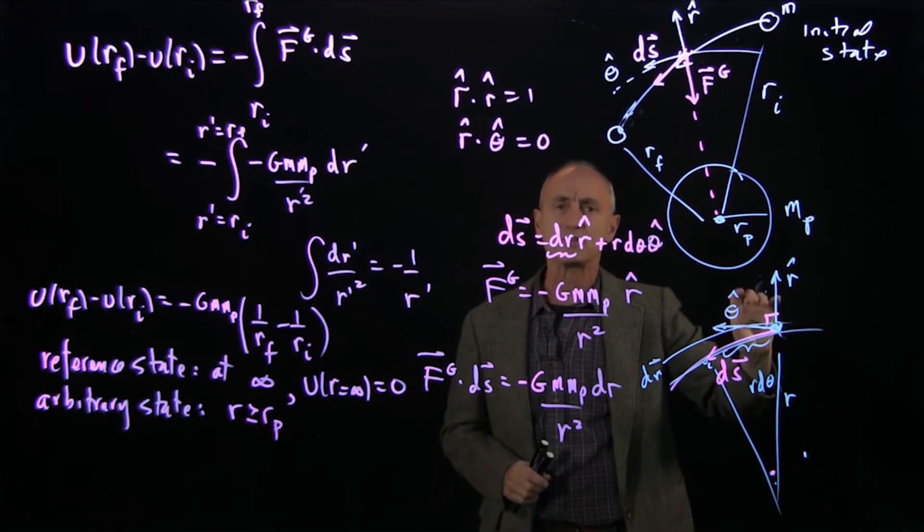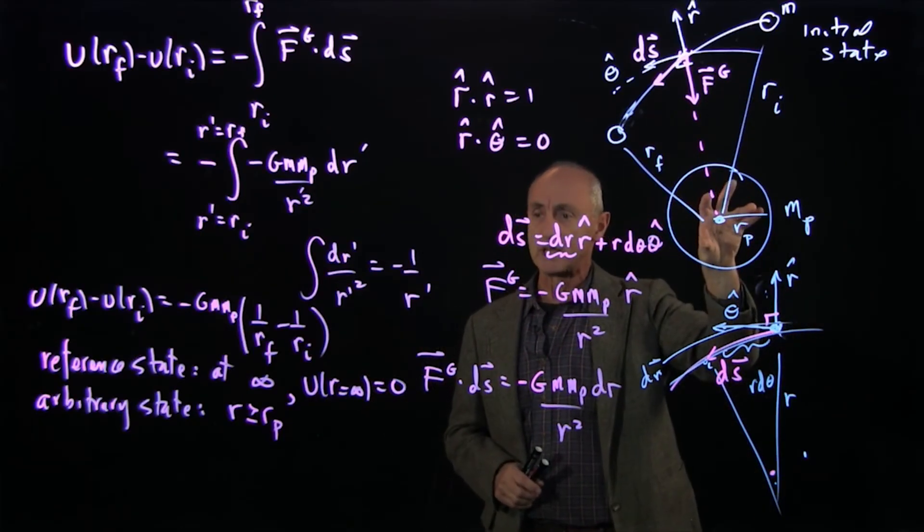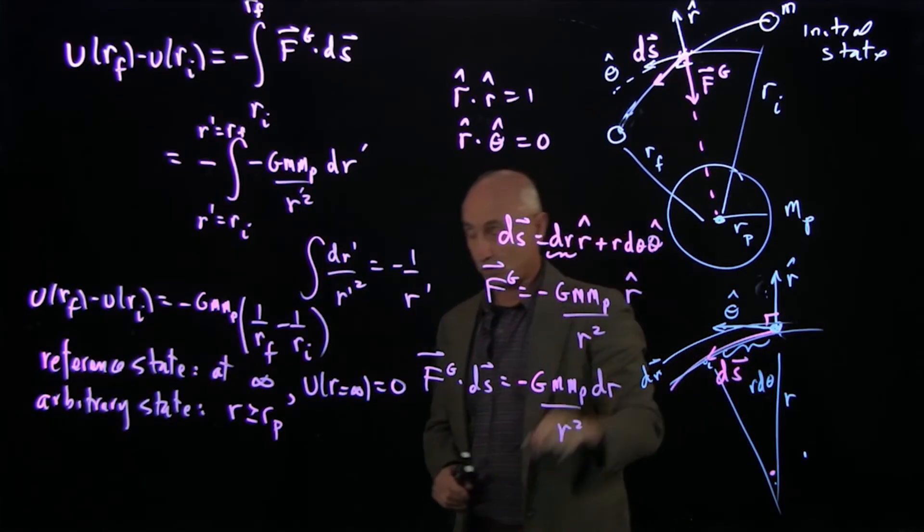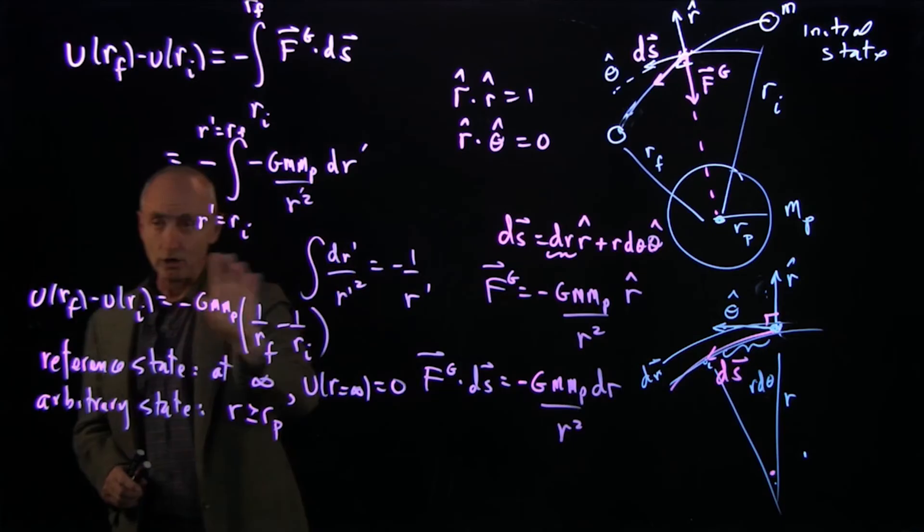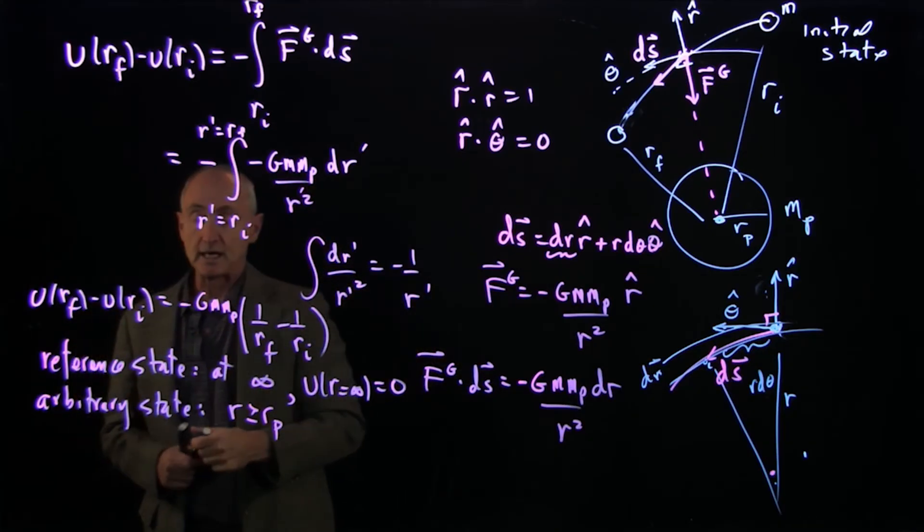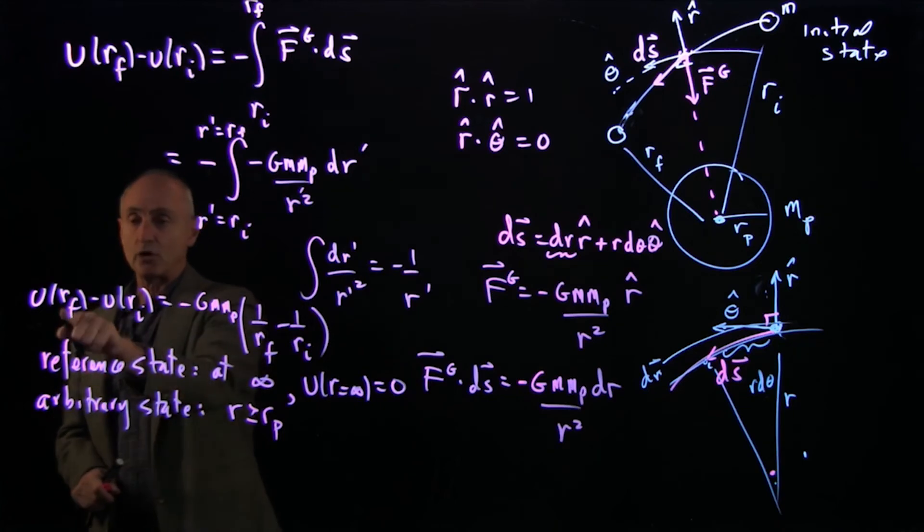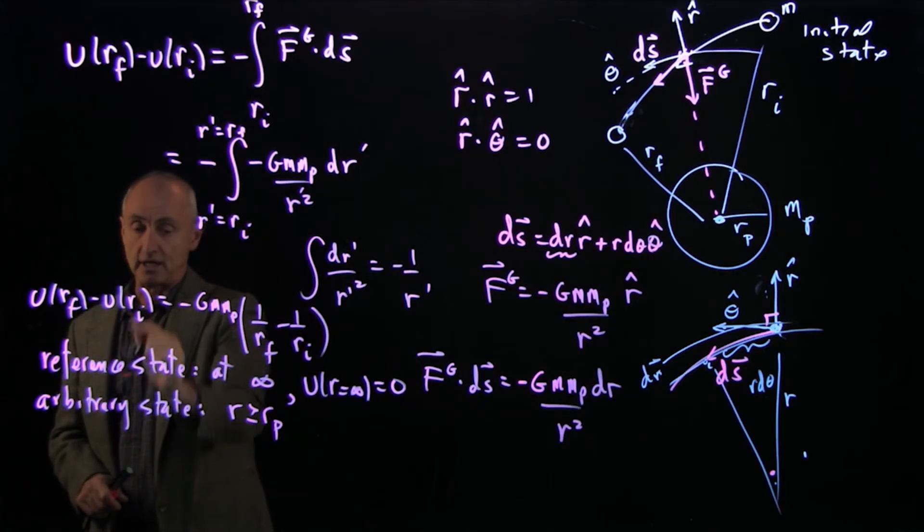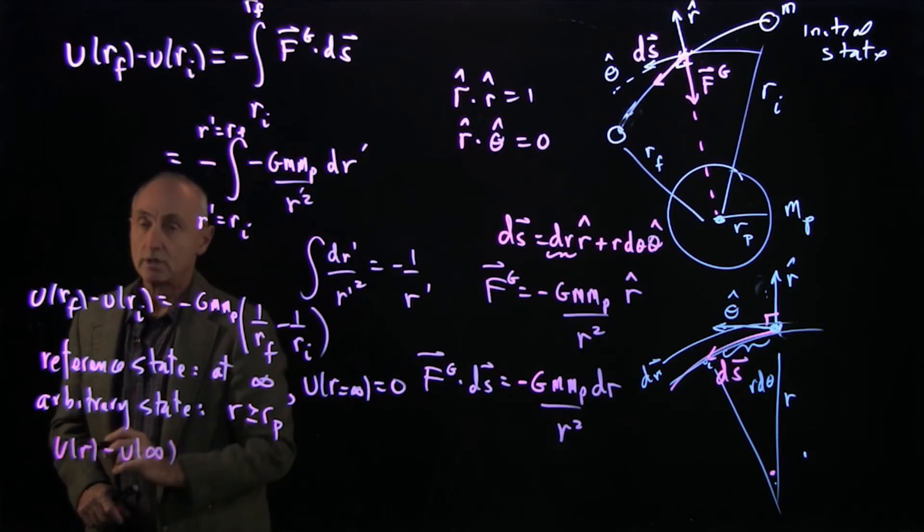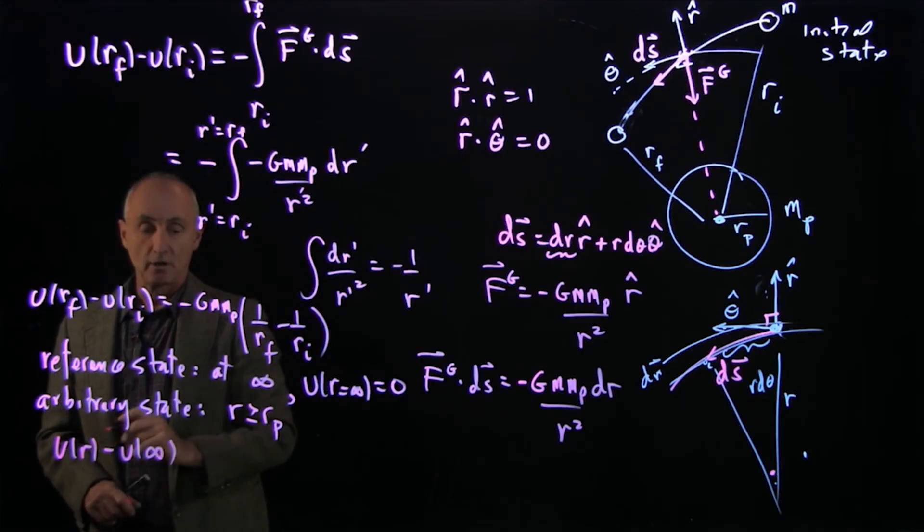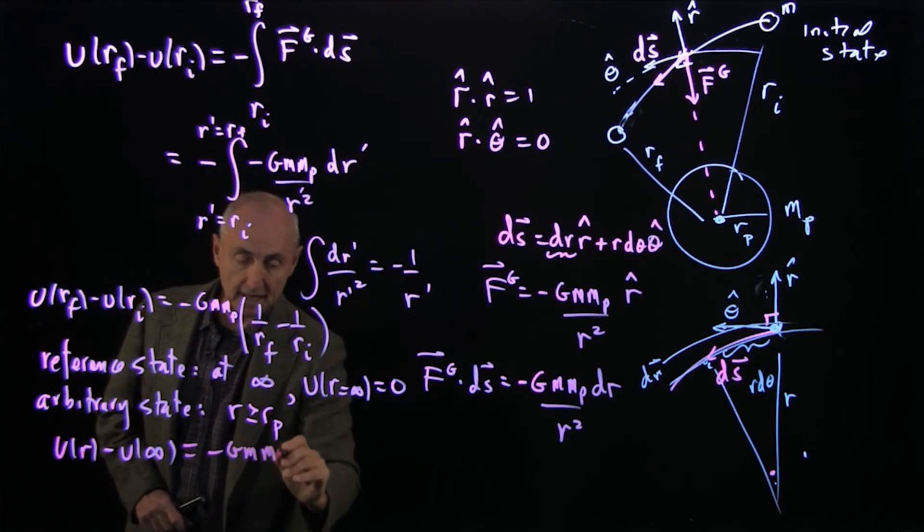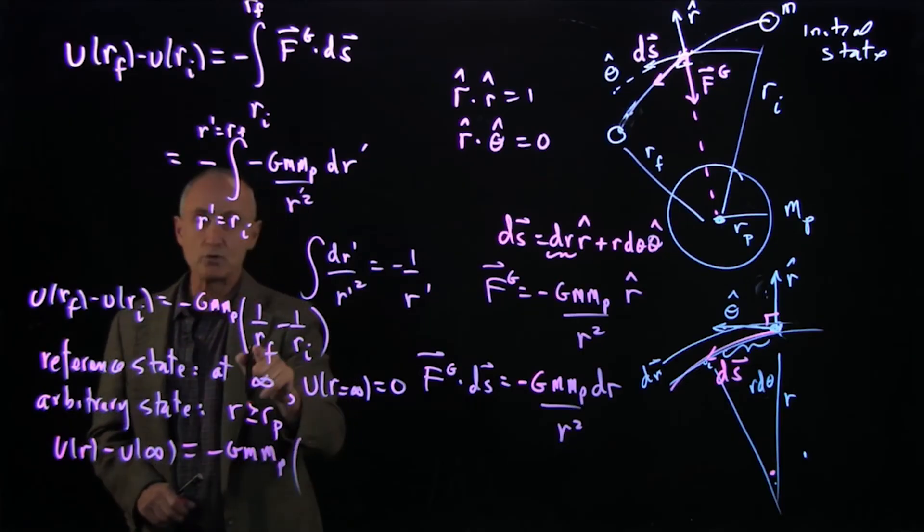And the reason for that is subtle. But the gravitational force inside the planet is no longer minus G m1 m2 over r squared. So our analysis only applies for r bigger than rp. And if we put these values for r and infinity in here, we get U(r) minus the potential at our reference point, which will be 0, equals minus G m mp.